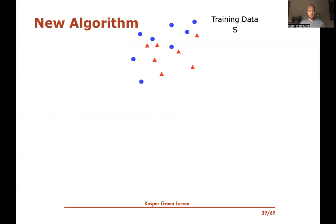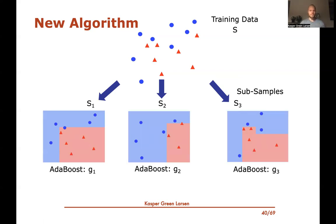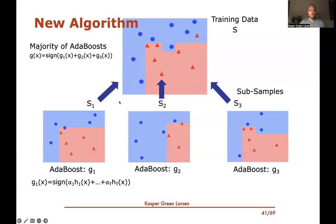Our new algorithm works as follows: given training data S, we partition it into subsamples — subsets of the original dataset. On each subsample we run AdaBoost, which produces a voting classifier for each subsample. Finally, we output the majority vote over all these AdaBoost classifiers. The final algorithm is a majority of majorities over all the simple hypotheses that the weak learner produces via AdaBoost.